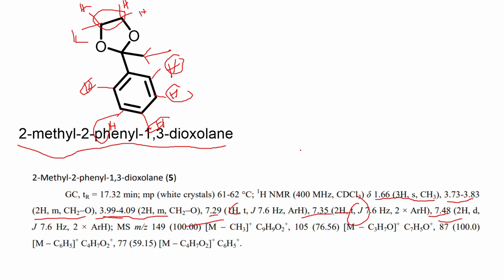Continuing with the aromatic signals: 7.29 (1H), 7.35 (2H, triplet), and 7.48 (doublet). That gives three aromatic signals and three aliphatic signals — six signals total. This proves the correct answer is definitely six. We have experimental data, and nothing can go beyond experimental data. Thank you for watching, and I'll see you in the next video.